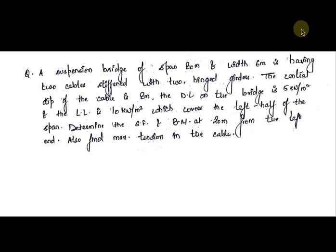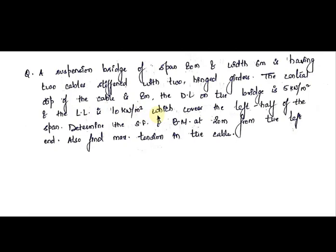Now let us do one numerical problem on two-hinged stiffening girder. In order to solve this question you must watch the previous video in which we discussed the various concepts of the two-hinged stiffening girder. The question is: a suspension bridge of span 80 meters and width 6 meters is having two cables stiffened with two-hinged girders. The central dip of the cable is 8 meters. The dead load is 5 kN per meter square and the live load is 10 kN per meter square covering the left half of the span. Determine the shear force and bending moment at 20 meters from the left end, and also determine the maximum tension in the cable.